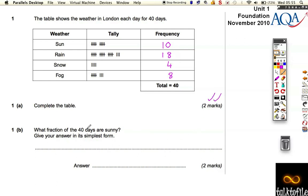Then it says, what fraction of the 40 days are sunny? Give your answer in its simplest form. What fraction of the 40 days are sunny? Well, 10 days are sunny out of the 40 total. That would get you one mark, 10 out of 40, but you've got to simplify it. Now,